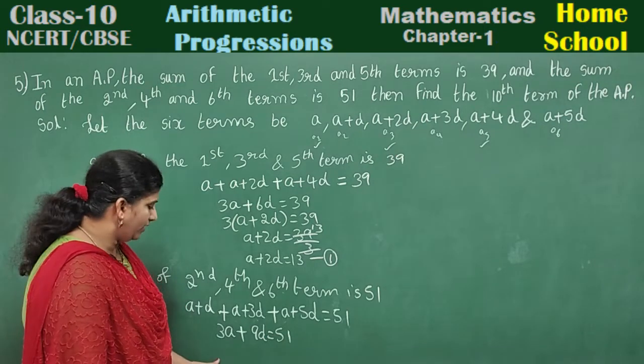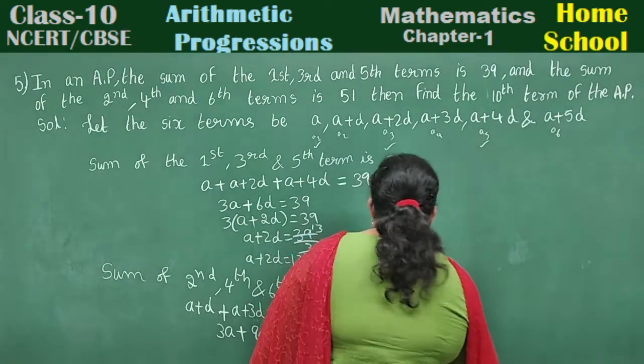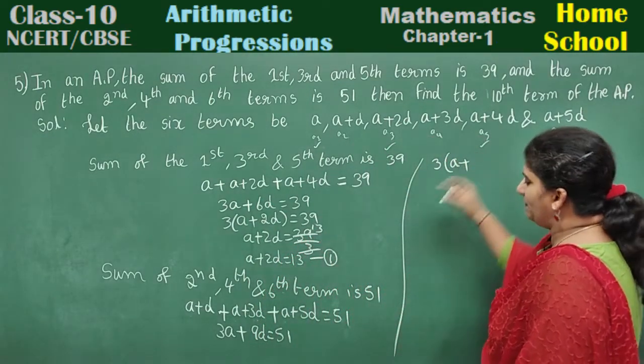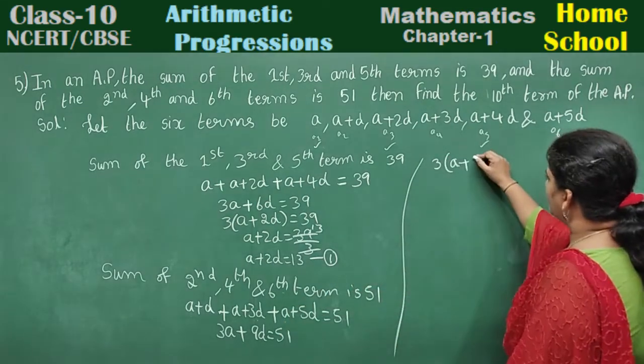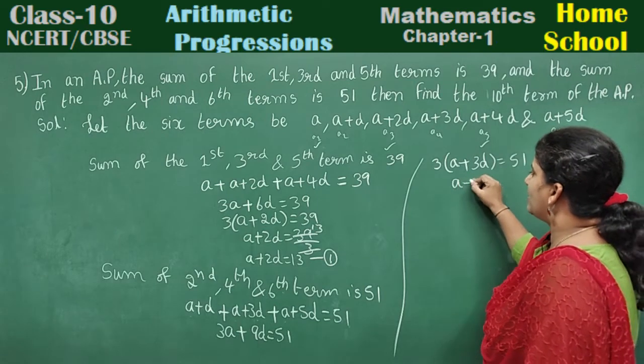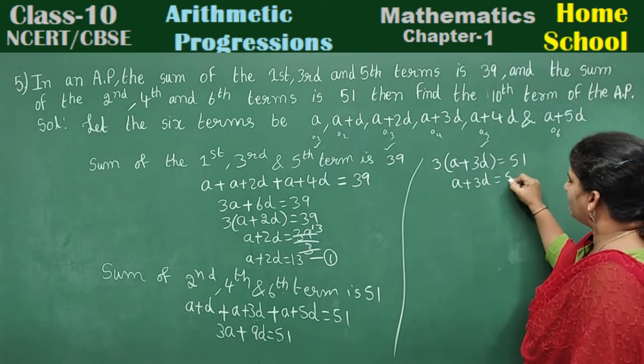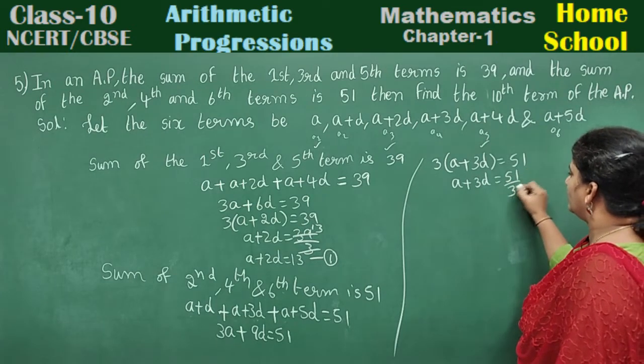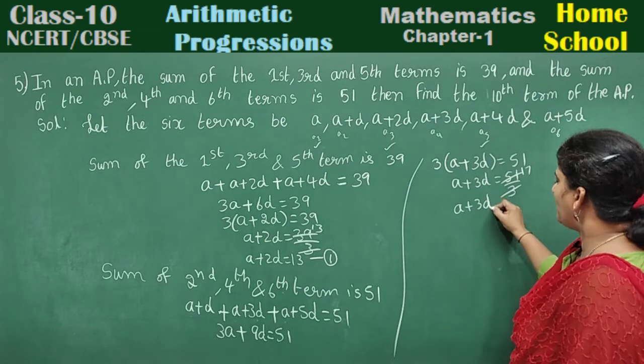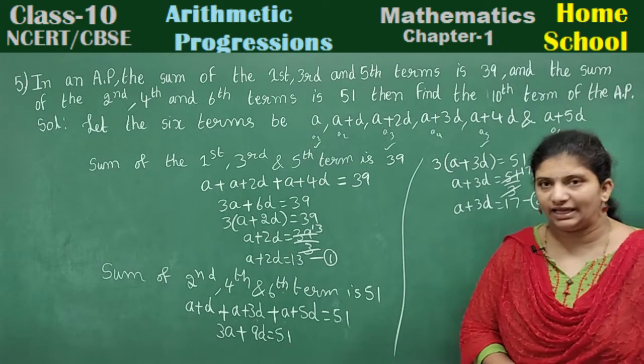Is there anything common? Yes, 3 is common. Take out 3 common: 3(a plus 3d) equals 51. Transpose 3 to the other side: 51 divided by 3 equals 17. So a plus 3d equals 17. Mark the second equation.